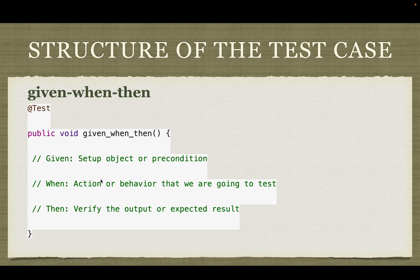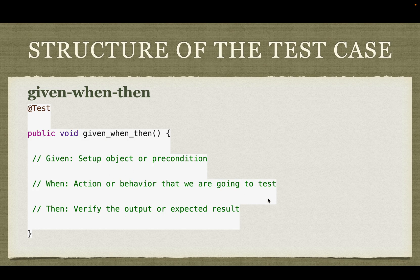Given is nothing but setting up the conditions for the execution of the test cases, or any preconditions that need to run before executing the actual test case. When is executing the actual test case — the action or behavior that we are going to test. Then is what we are expecting from the unit test case. This is what Given-When-Then means, and it is commonly used across organizations. If you are not familiar with it, don't worry — while we do the code demo you will understand it really well.